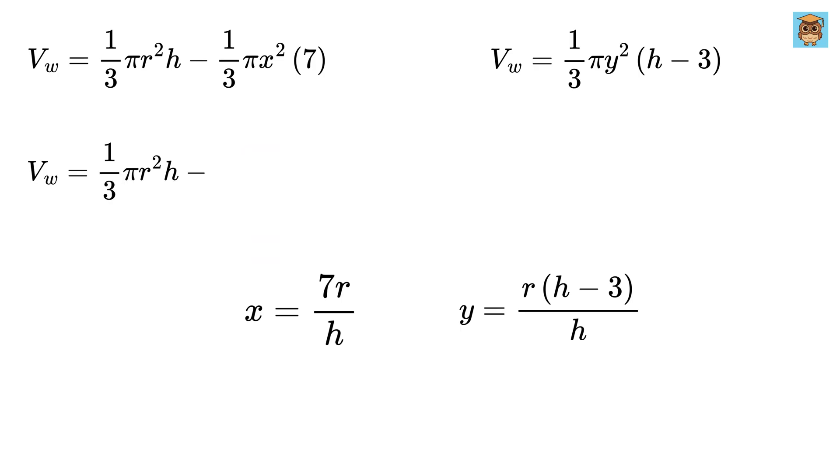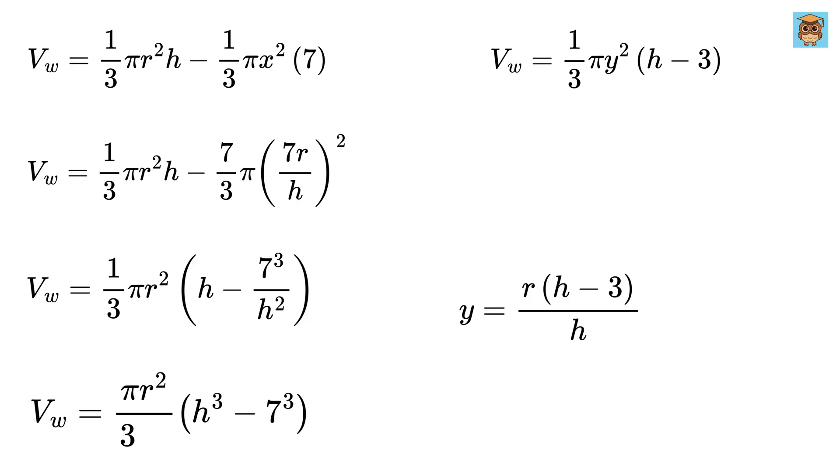This becomes pi R square H over 3 minus 7 pi over 3 times X square or this square, so we can rewrite this as pi R square over 3 times H minus 7 cube over H square, or pi R square over 3 times H cube minus 7 cube whole divided by H square.